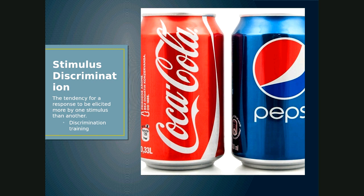If you have a generalized response, you can be taught to discriminate through discrimination training. In Pavlov's example, if a dog has generalized responding and salivates to bells, gongs, and whistles, you can teach it to discriminate by presenting meat powder only when you ring the bell. When you bang the gong or blow the whistle, you do not present the meat powder. The dog will lose responding to those stimuli — you extinguish responding to the gong and whistle while maintaining responding to the bell.